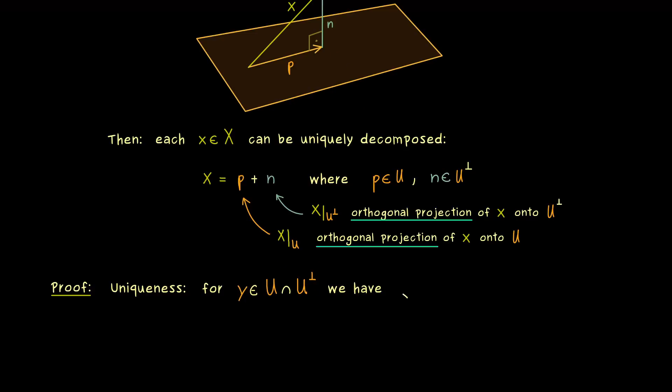However, if we take any element y from this intersection, then we know it lies in the orthogonal complement of U. This means, in the inner product we get zero here, no matter which u in U we choose.